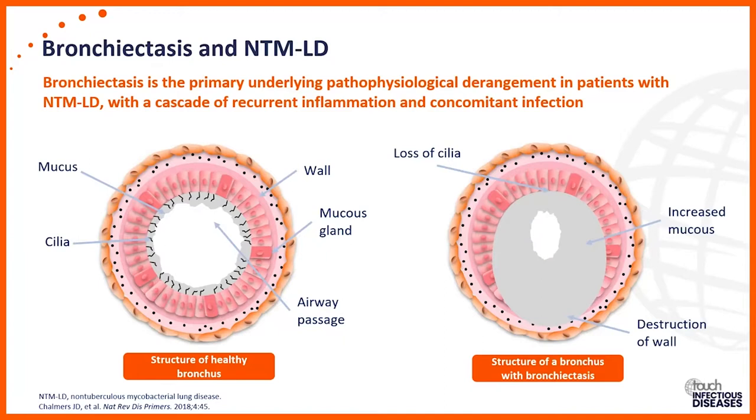There is a very distinct link between bronchiectasis and NTM lung disease. Although both of them overlap, it's not really clear as to the cause and effect relationship. The debate constantly is that NTM infection may exacerbate bronchiectasis and bronchiectasis begets bronchiectasis. Bronchiectasis is defined as the permanent bronchial dilatation secondary to chronic inflammation and infection.